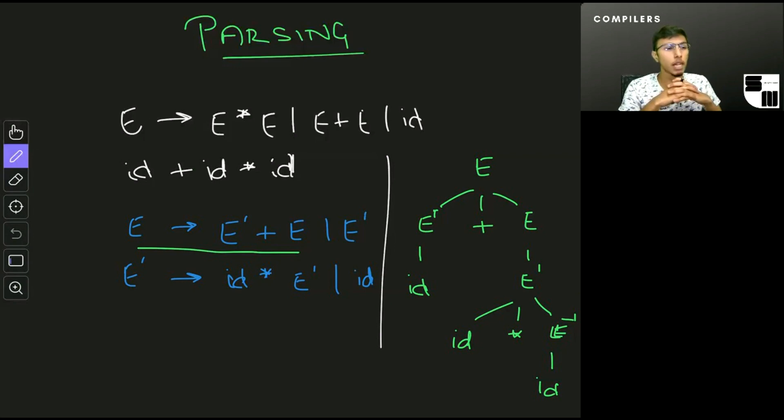In the parse tree that I have on the right, multiplication being farther away from the root is always going to be performed first and addition is going to be performed later. No matter what kind of combination of addition and multiplication I have, if I use the grammar in blue, that's going to assert the precedence of multiplication over addition.